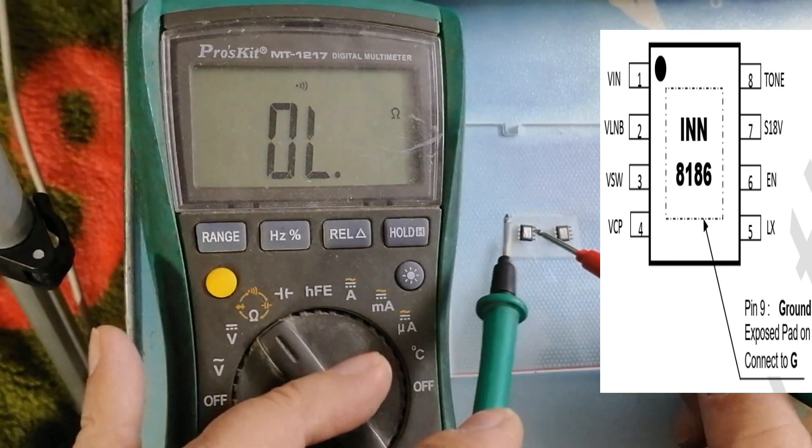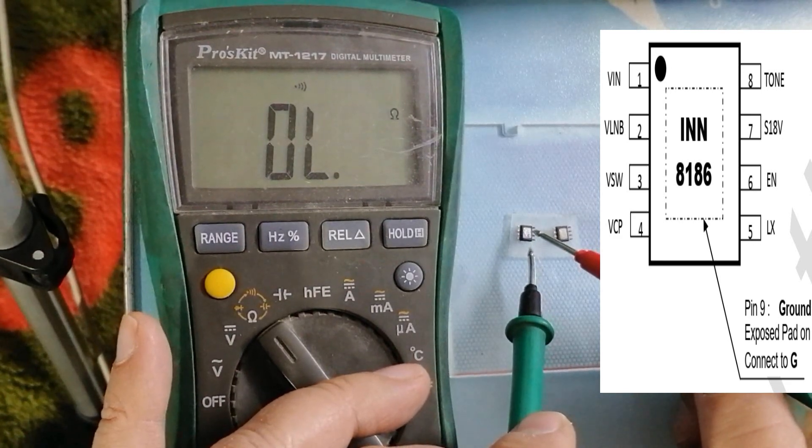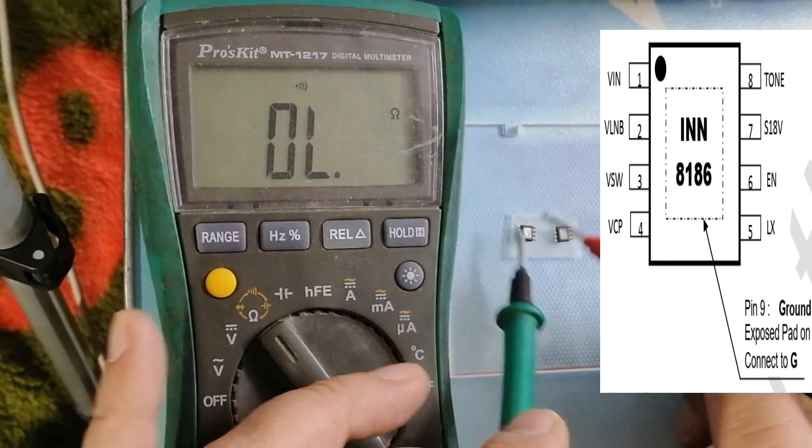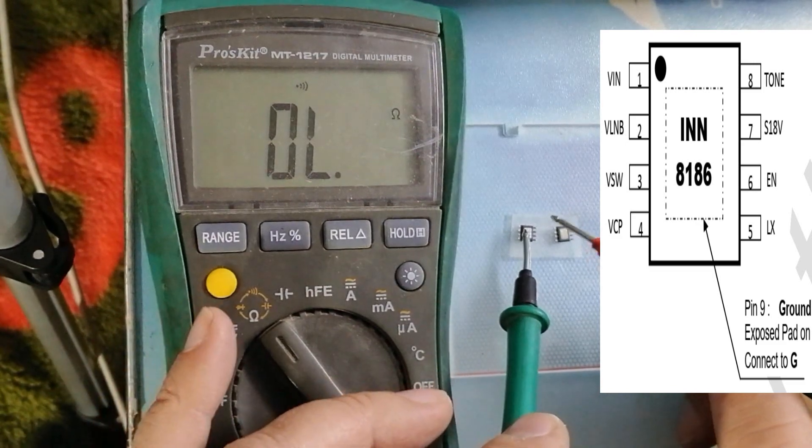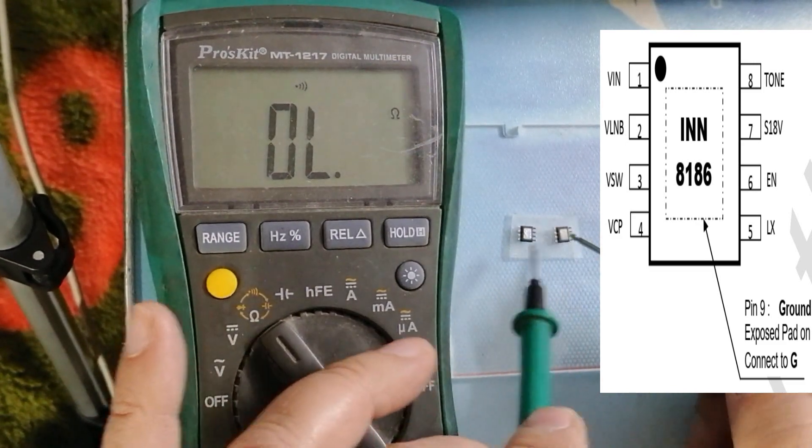So when you connect the mini receiver to electric, the receiver will shut down and does not work. There is no any digital number.